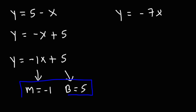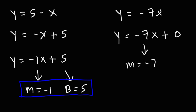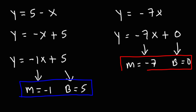Now what about number 5? All we have is just negative 7x — it doesn't appear to have any b value. In a situation like this, you can rewrite this equation as y is equal to negative 7x plus 0. Negative 7x plus 0 is the same as negative 7x. Writing it this way, you can clearly see that the slope is negative 7, but the y-intercept is 0.